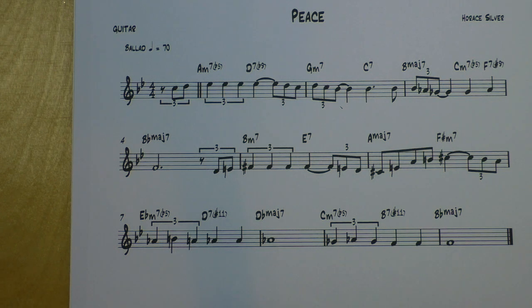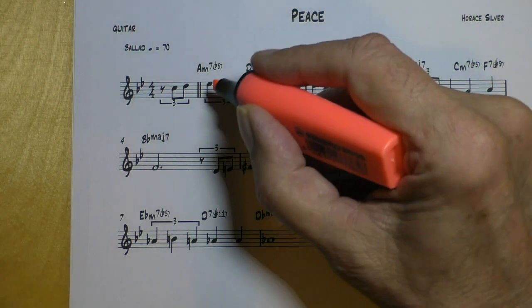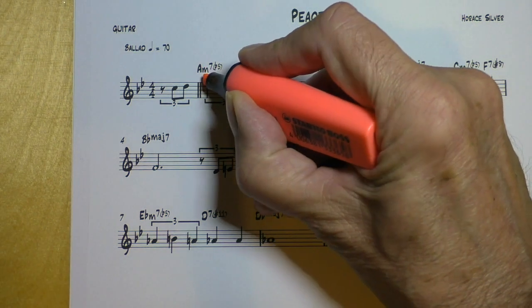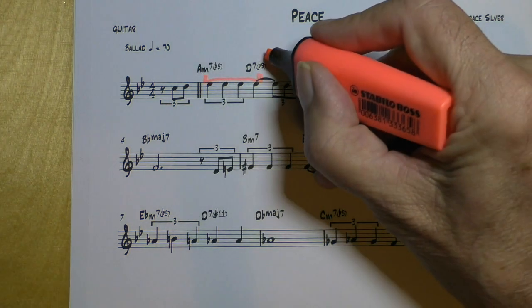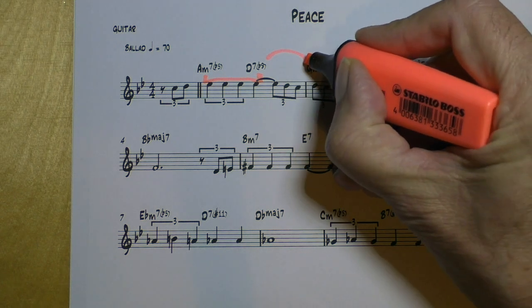I usually check for 2-5-1s first and substitute 5s. This song has, though it's very short, only 10 bars, it has a lot of them. So the first one is this A minor 7b5 to D7b9 is a 2-5 in minor, going to the 1.